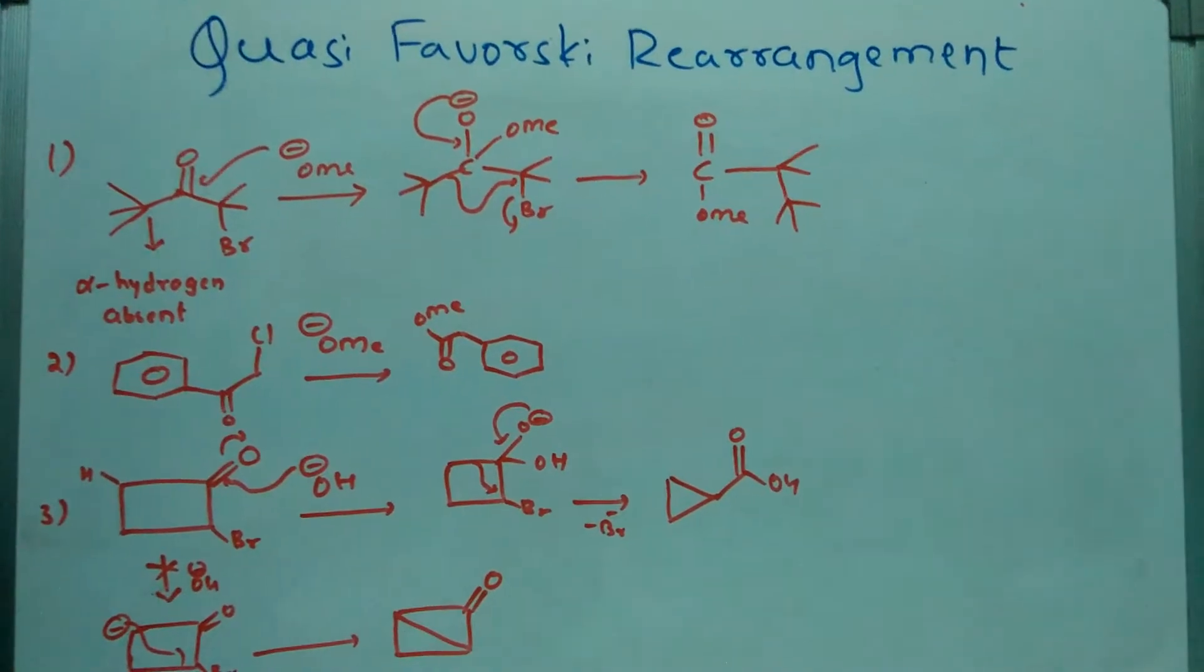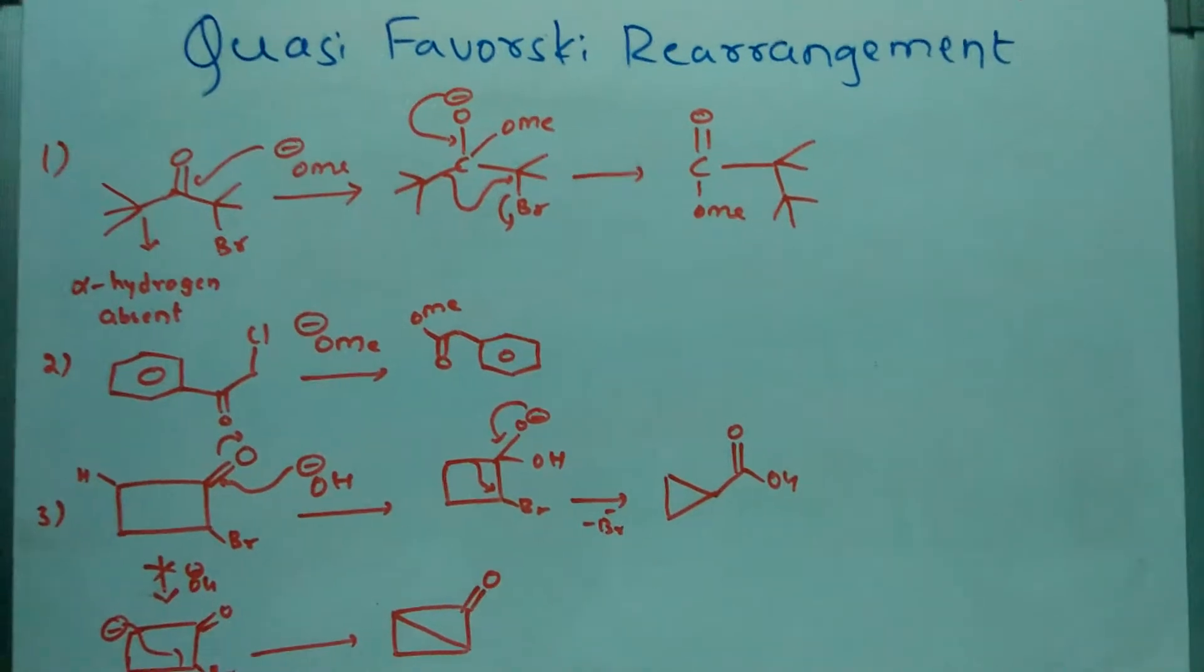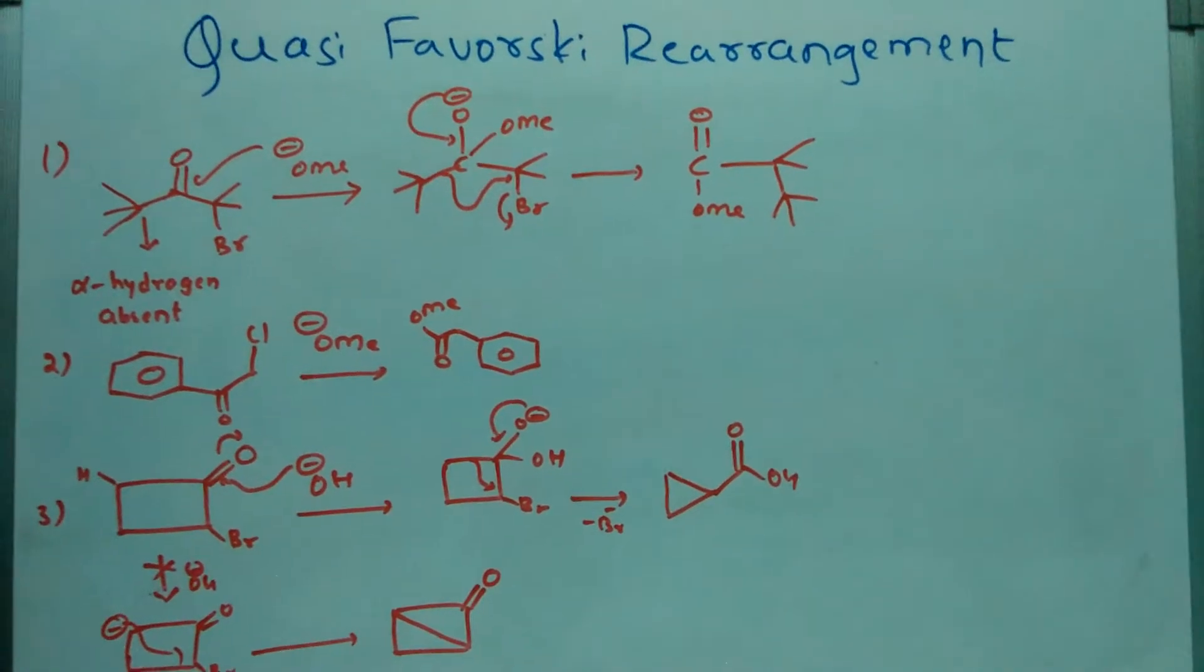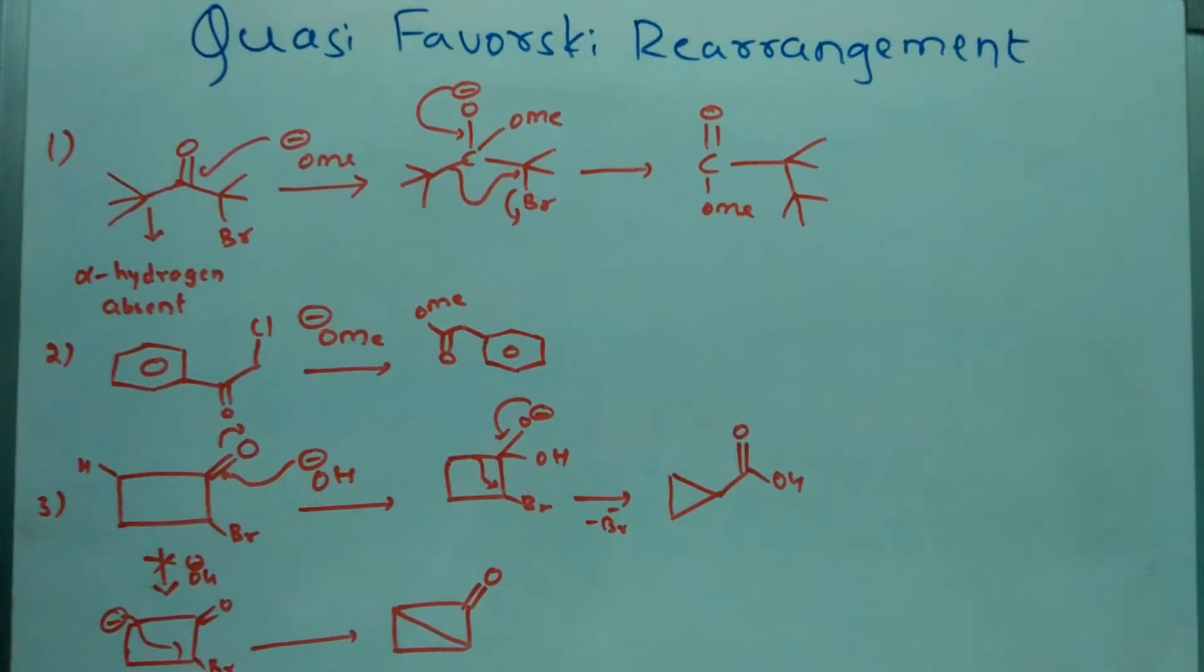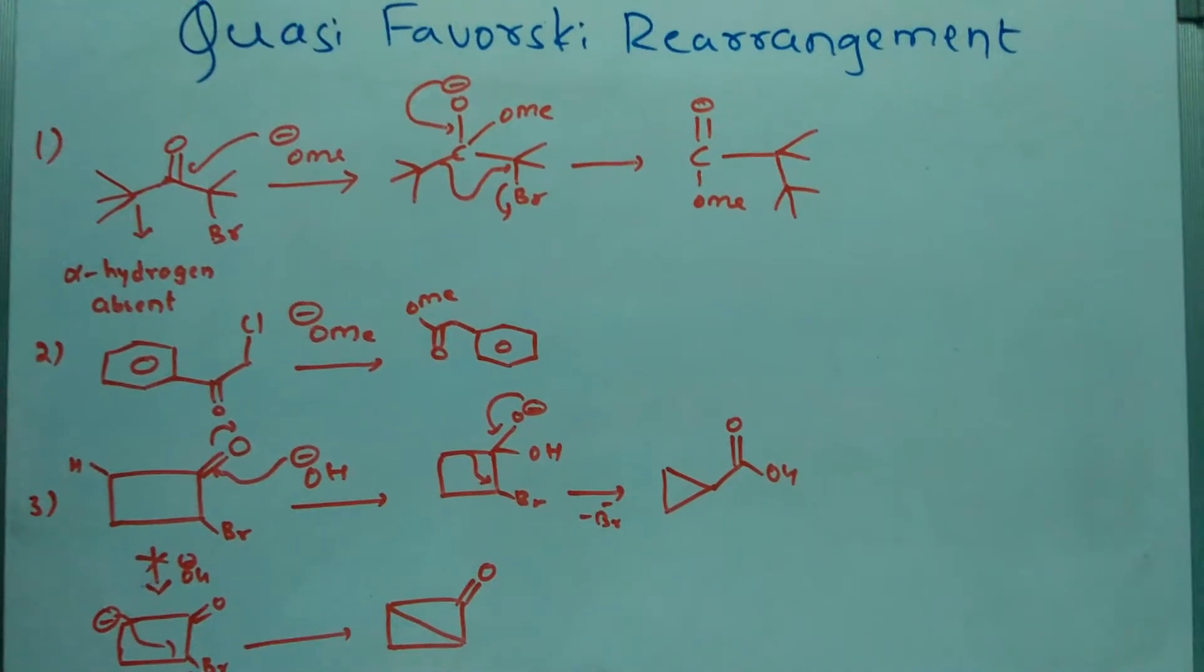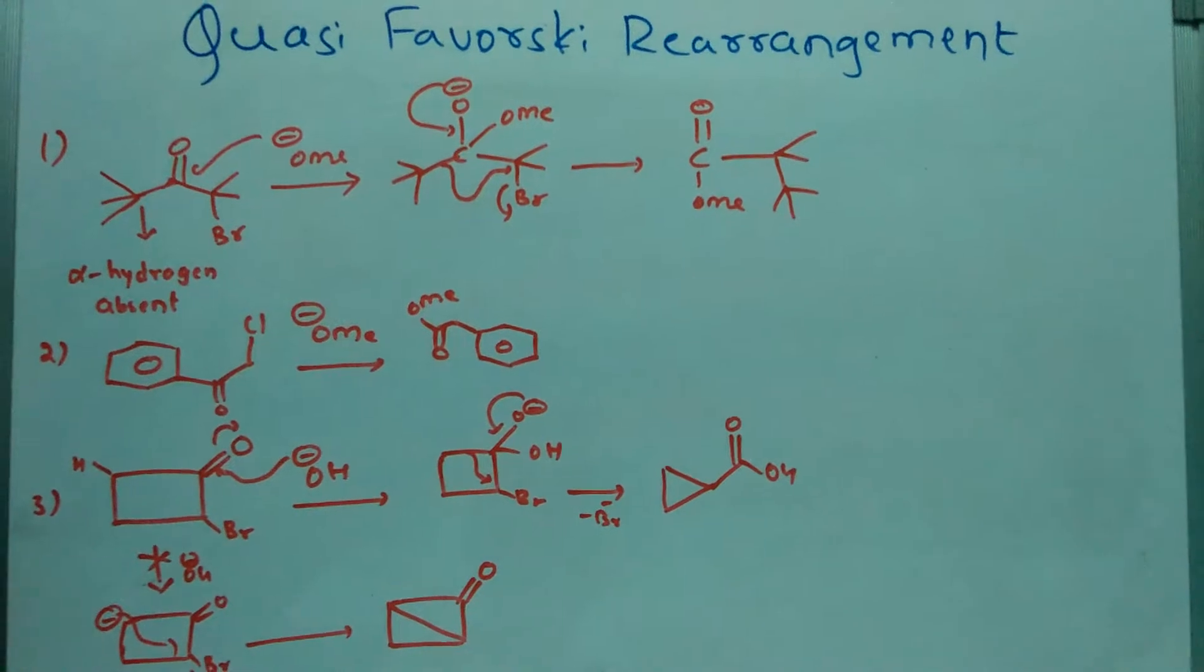In Favorski rearrangement, the cyclopropanone intermediate is formed, but in this Quasi-Favorski rearrangement, there is no formation of cyclopropanone intermediate.